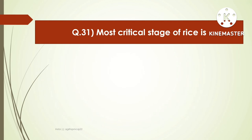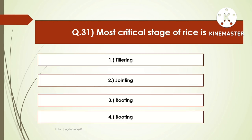The next question is: the most critical stage of irrigation in rice is — options are tillering, jointing, rooting, or booting. The right answer is booting. Booting is the most critical stage of irrigation in rice.